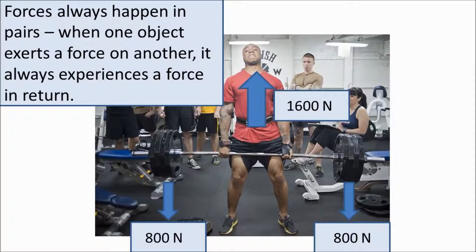This guy, for example—his muscles are providing an upward force of 1600 Newtons, and gravity is pulling the masses down with a force of weight of 1600 Newtons in the opposite direction. So the directions are opposite, but the force itself, the strength of the force, the magnitude of the force, is the same.